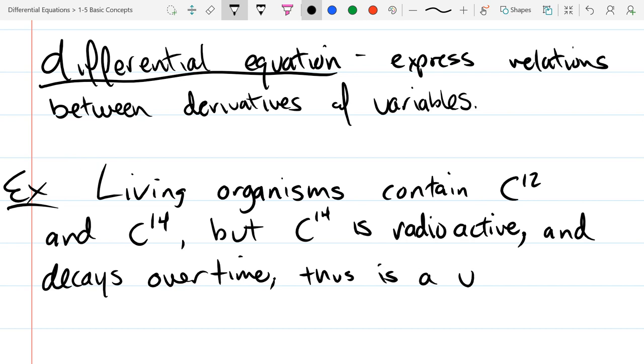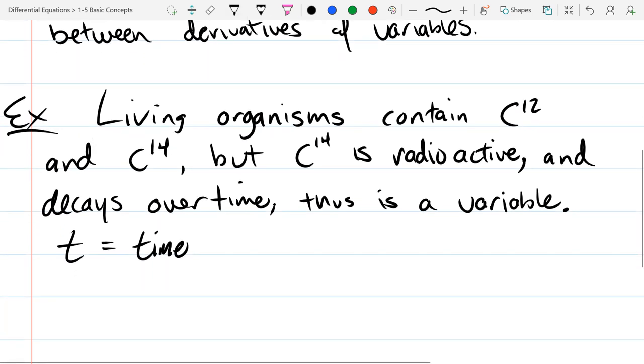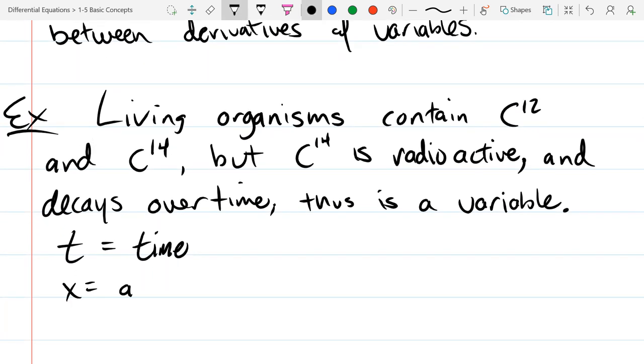This is a variable, cool. It's going to change, decay, decrease in this case. So it is going to change over time, so it is a variable. So let's lay out our variables. We'll use T for time, and X equals amount of C14 at time T.